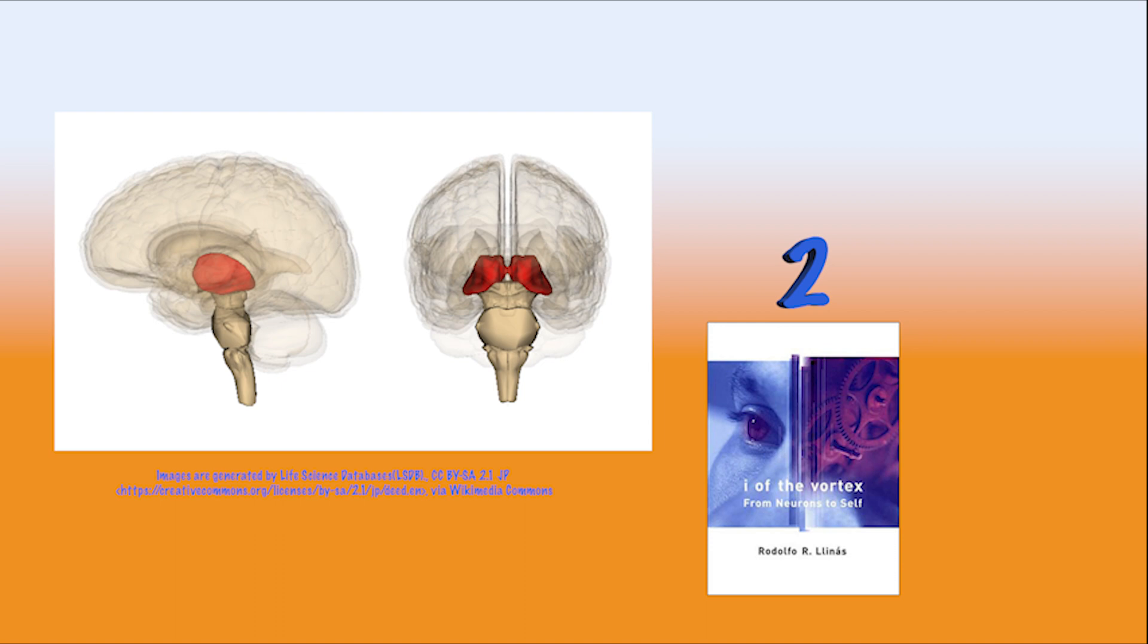At second place is Rodolfo Llinas' book, I of the Vortex. Vortex in this case means the sort of inside-out turn going from thalamus to cortex and back, continually. Llinas believes this corticothalamocortical recurrent circuit is the seat of consciousness.